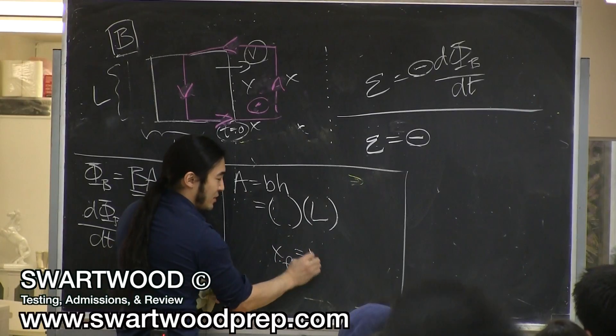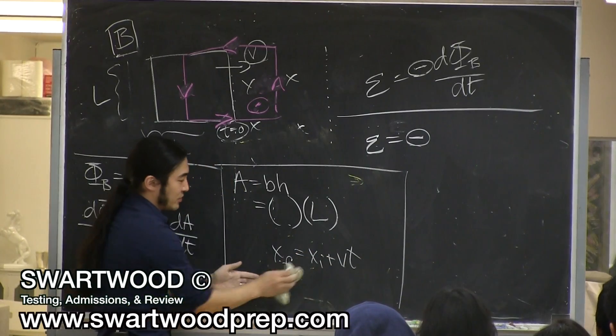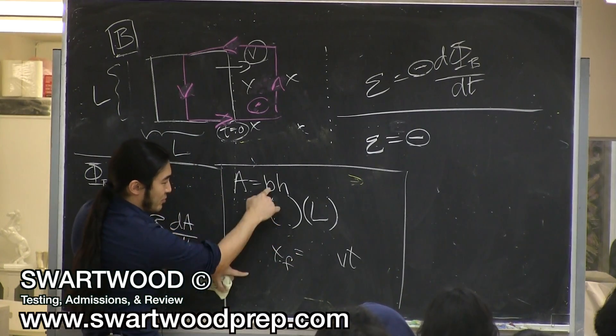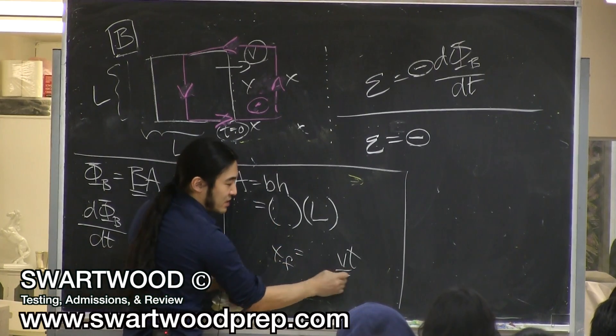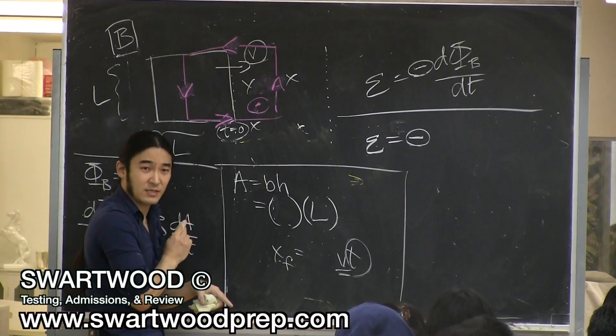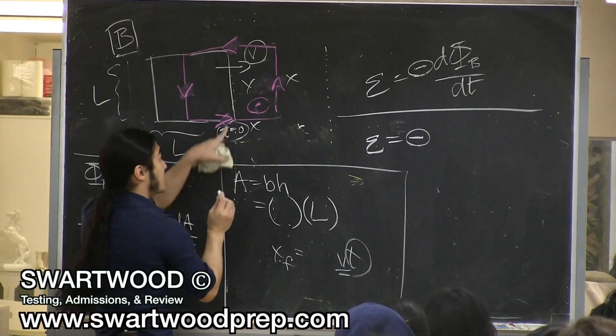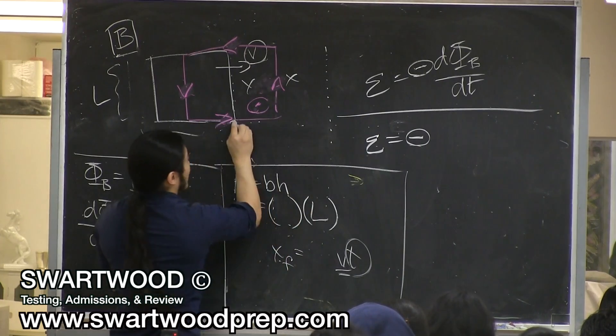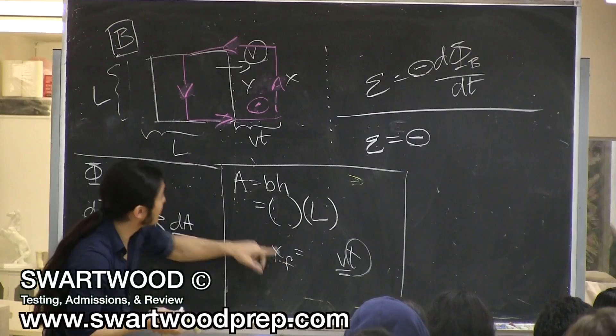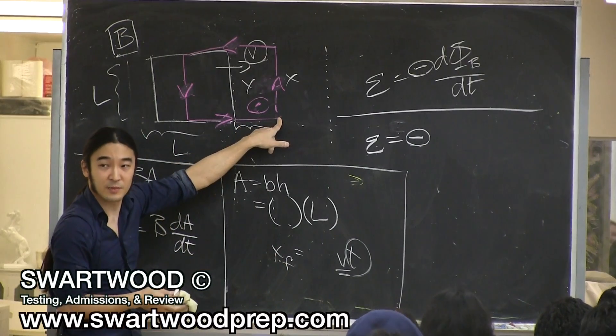Where you end up is where you start plus velocity times time. Where you started was zero. So what's your total distance, your base from left to right? It would be your constant velocity times how much time has passed. So this length here is velocity times time. Because if you multiply velocity times time, you'll get the distance you've covered.